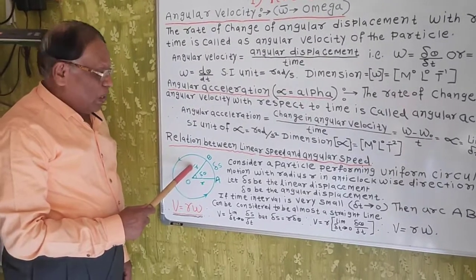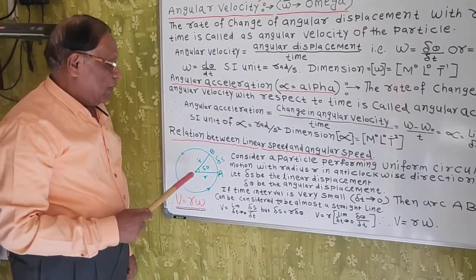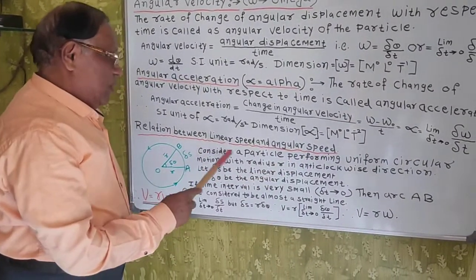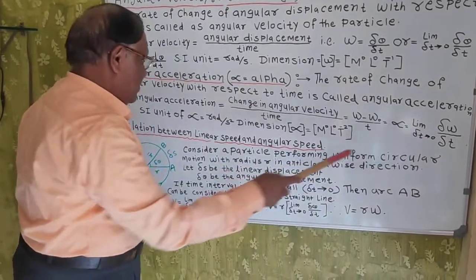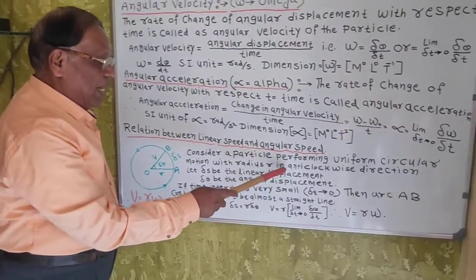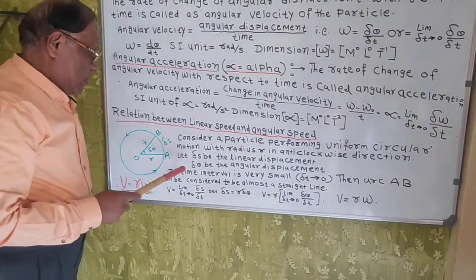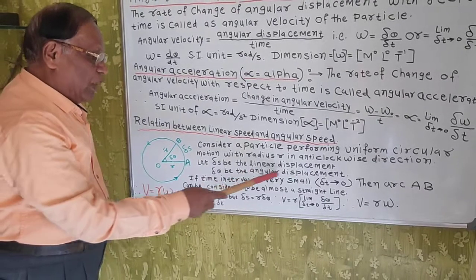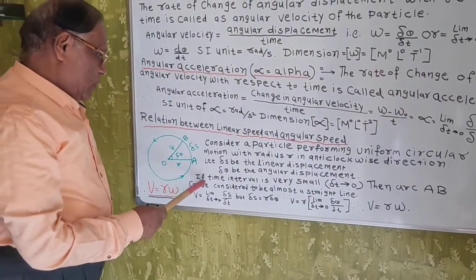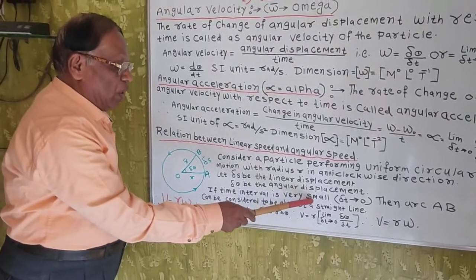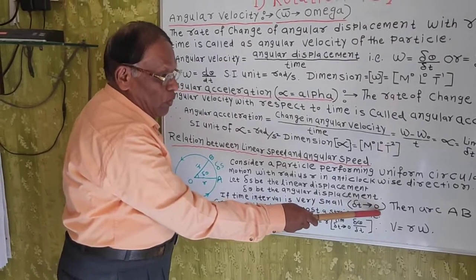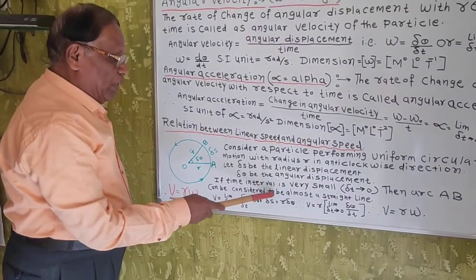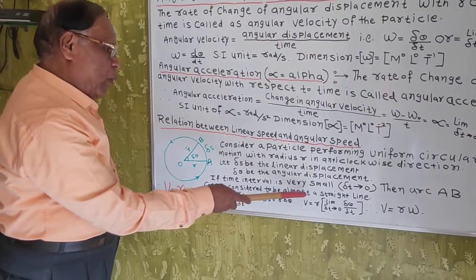Let R be the magnitude of the position vectors OA and OB. As the particle is performing uniform circular motion with radius R in the anticlockwise direction, let delta S be the linear displacement and delta theta be the small angular displacement. If the time interval is very small, then as delta t tends to 0, the arc AB can be considered to be almost a straight line.